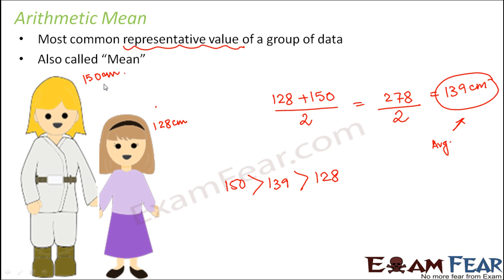Instead of two girls, let's say there are 60 students in a class and all of their heights are given. If you are asked what is the average height of the class, you would find the sum of the heights of all students in the class divided by the number of students in the class. That is how you find the arithmetic mean, and there too you will find that the value of mean lies somewhere between the minimum value and the maximum value in the set of data.